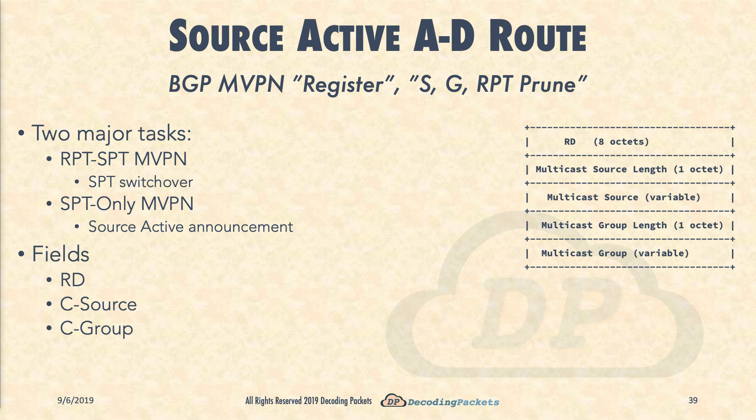Now let's take a look at the packet itself. The RD is the route distinguisher for the L3VPN VRF the MVPN is configured for, and it provides the exact same functionality as it does in Layer 3 VPN. As with other route types in BGP MVPN, such as the C-Multicast route, the next two fields together describe the source IP.